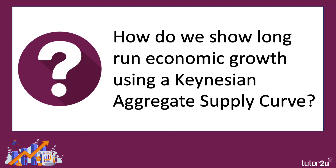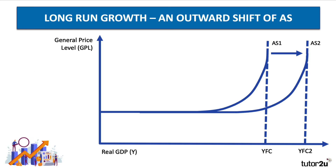How do we show long-run growth using a Keynesian supply curve? The Keynesian supply curve tells us what the productive capacity is of an economy. So that's how we show long-run growth — an increase in the full capacity national output from YFC to YFC2. It could be the case that costs have come down as well, but here I've shown an increase in productive capacity from AS1 to AS2.